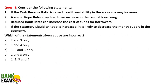Consider the following statements about monetary tools. If CRR (Cash Reserve Ratio) is raised, the credit availability in the economy may increase — this is incorrect. If the cash reserve ratio is raised, the banks will have less money available, so credit availability in the economy will reduce. This statement is false.